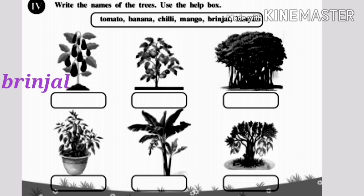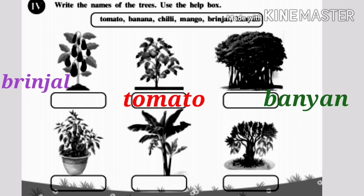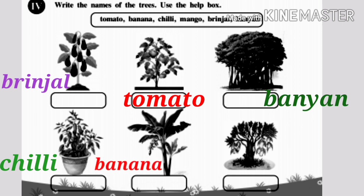First one is brinjal. Second one is tomato. Third one is onion. Fourth one is chilli. Fifth one is banana. Sixth one is mango tree.